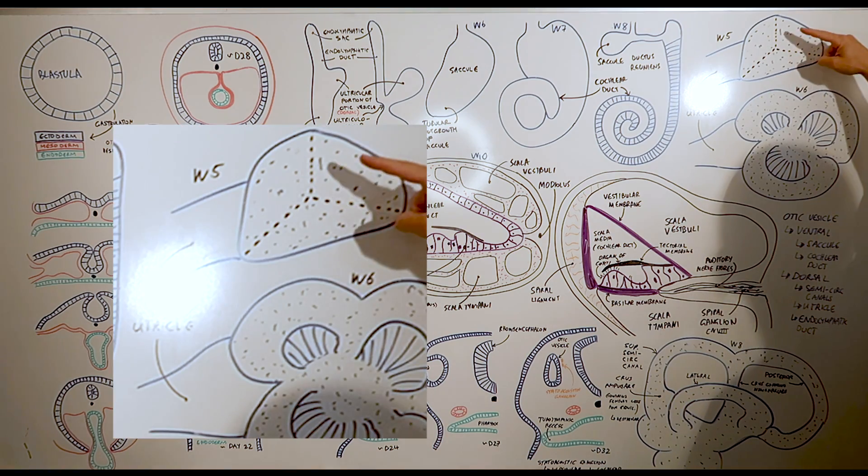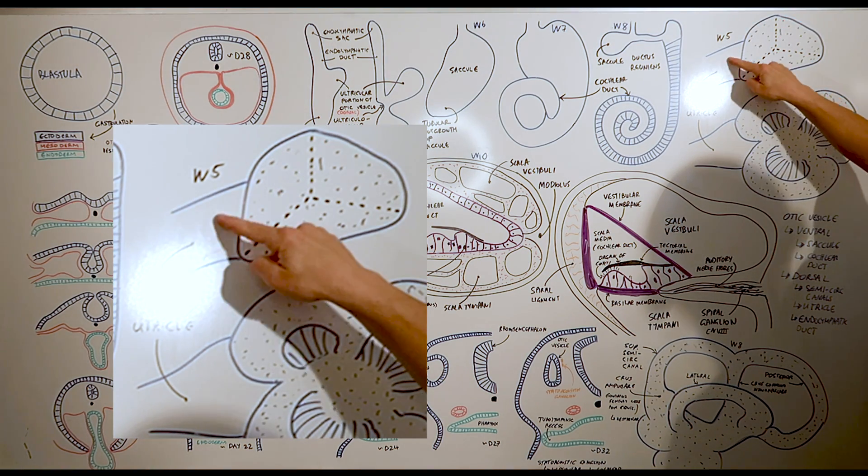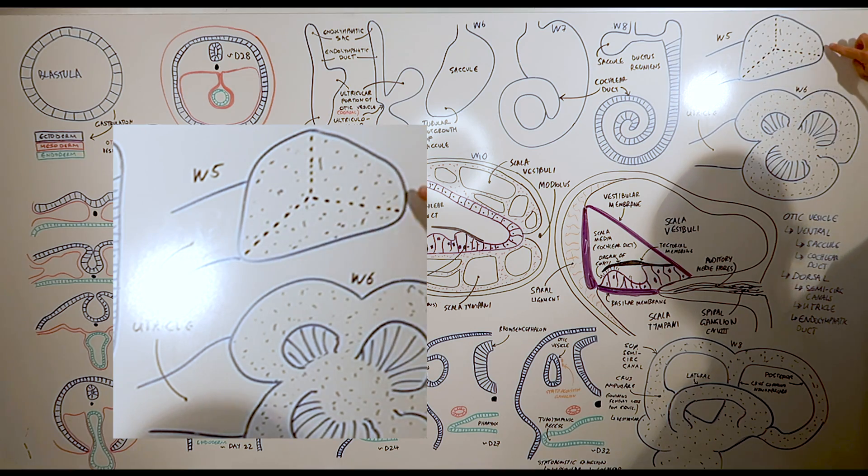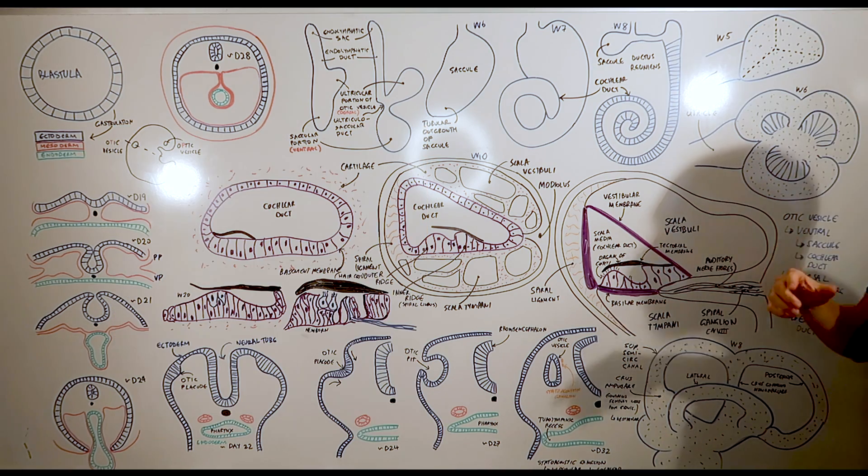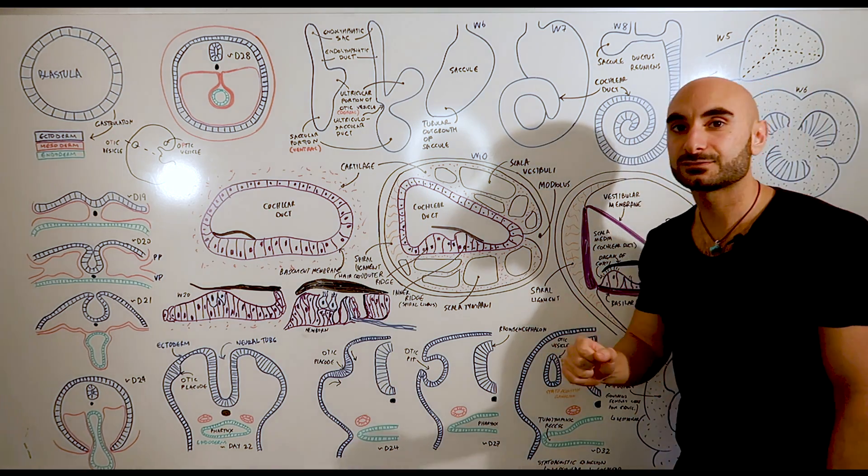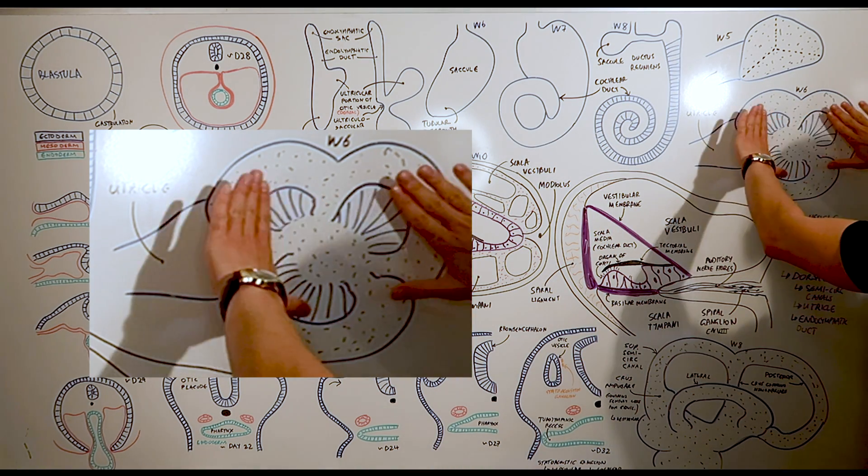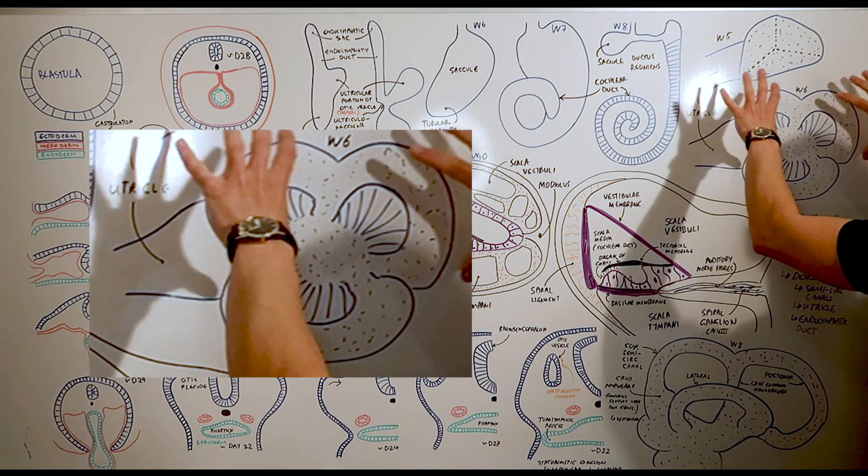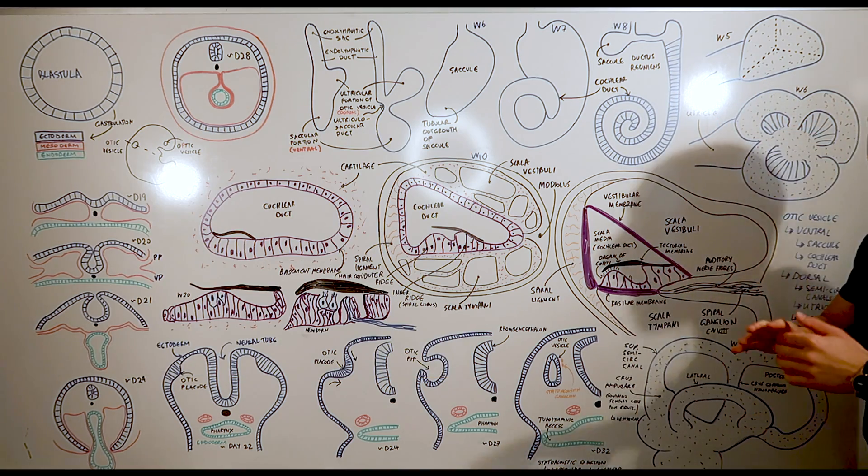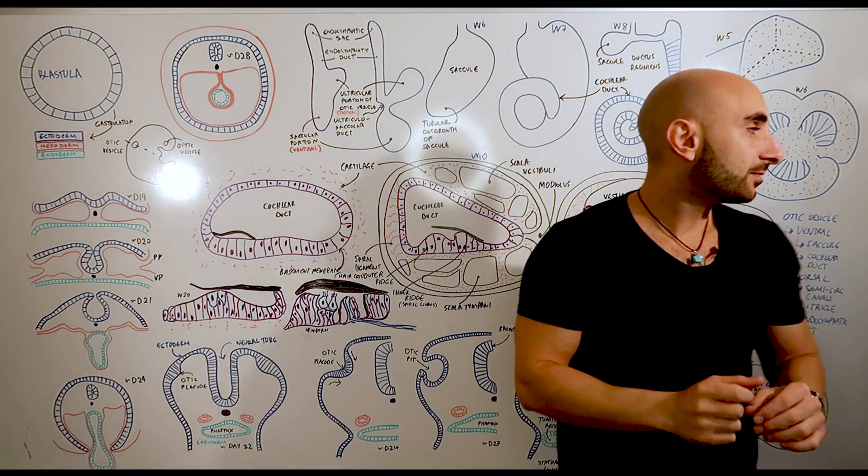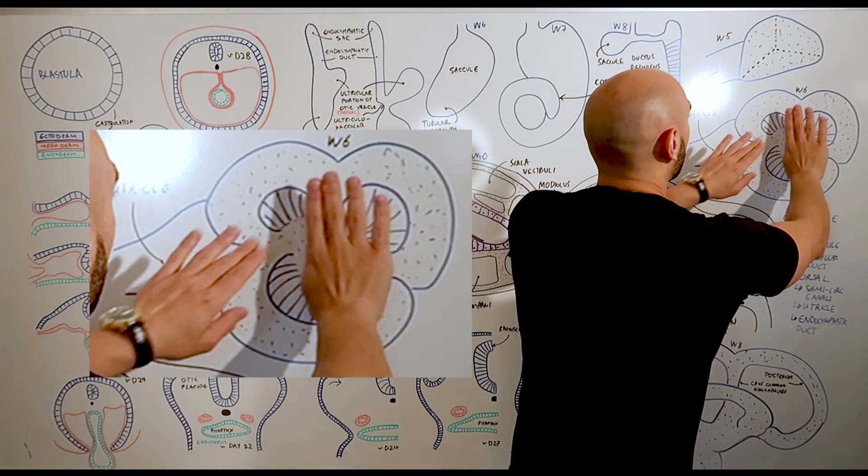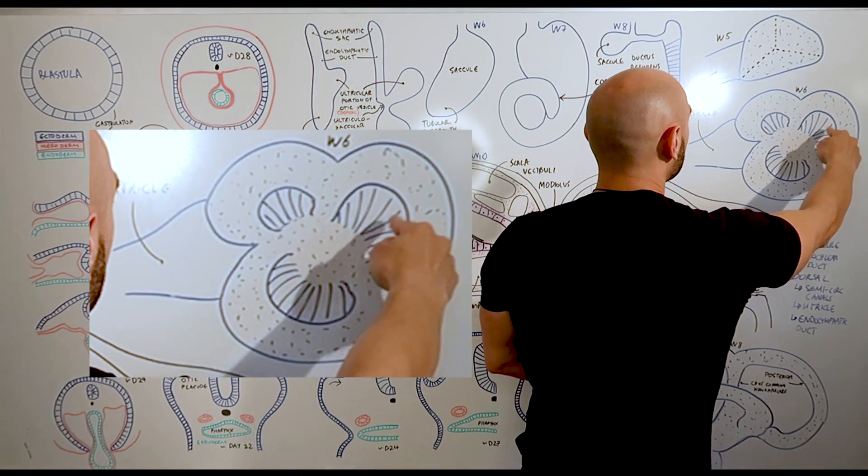Over here in week five, we have a growth. This is the utricle and this is the growth of the future semicircular canals. There are initially walls that grow as the tissue is growing. These walls are next to each other - they are close to each other and it's all tissue.